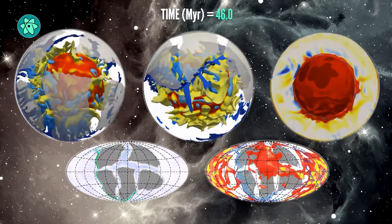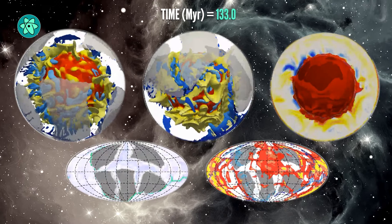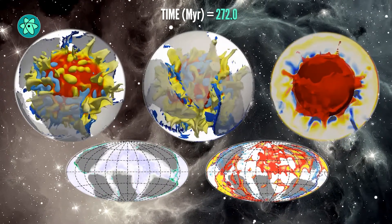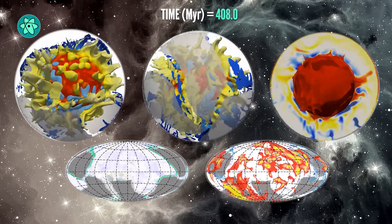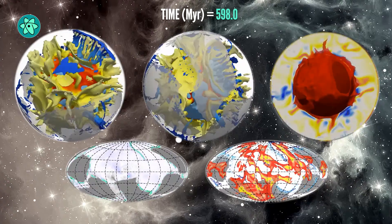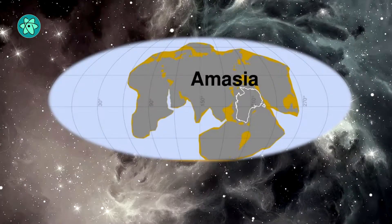The team's simulation of how the Earth's tectonic plates will evolve shows that in less than 300 million years, unlike what previous scientific theories say, it will be the Pacific Ocean to close as America collides with Asia. The resulting new supercontinent has already been named Amasia.